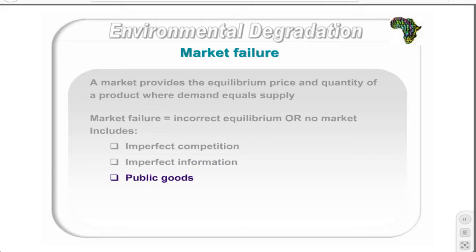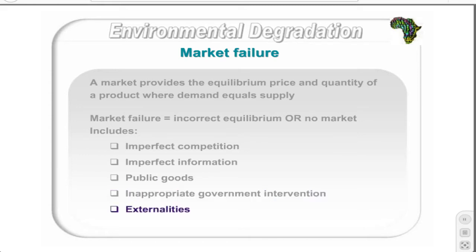Public goods are goods that will not be produced in optimal quantities by the market — for example, street lamps, where it is almost impossible to force people to pay for their installation and maintenance. Other causes of market failure include inappropriate government intervention, externalities, and property rights. Of these, public goods, externalities, and property rights will be discussed further.